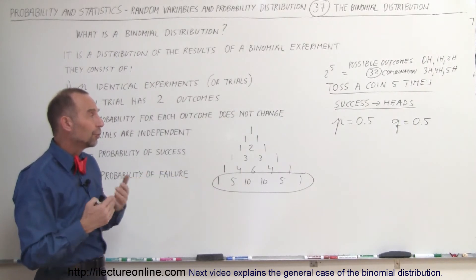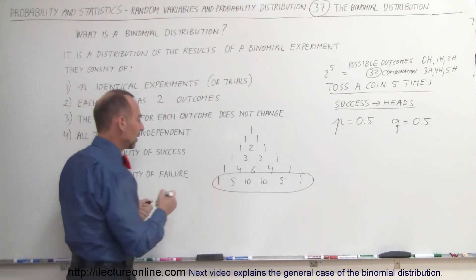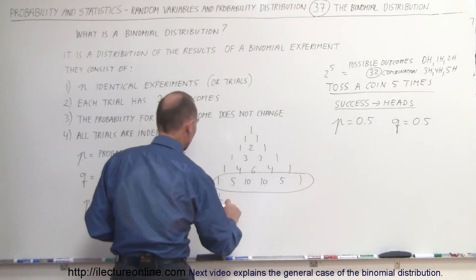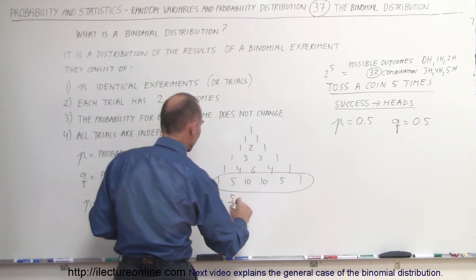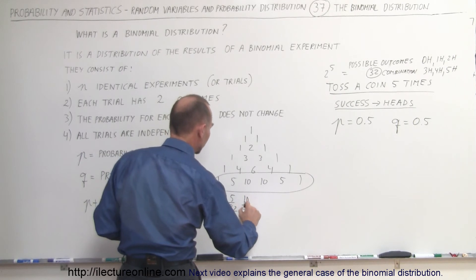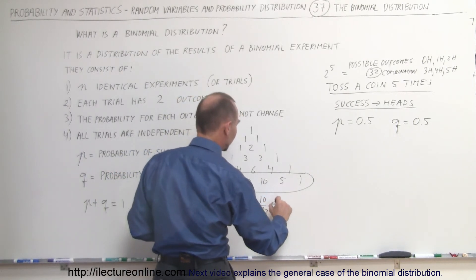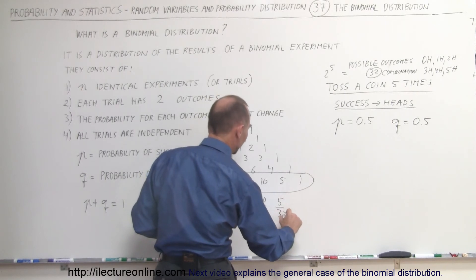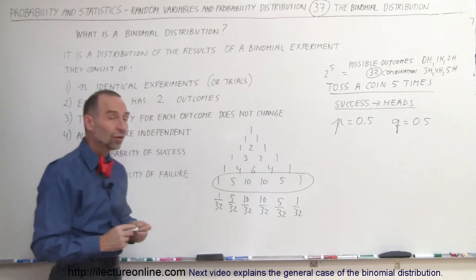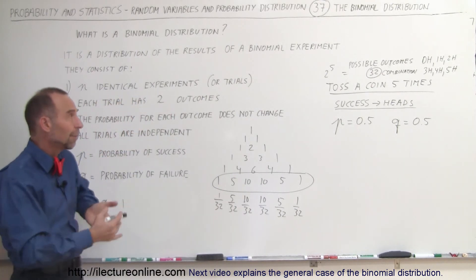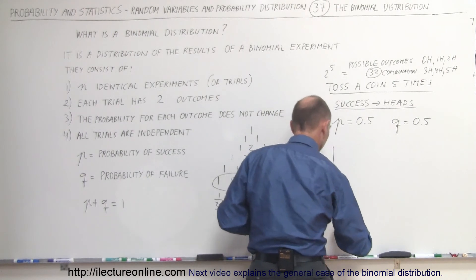Which means out of 32 possible combinations: 1 out of 32 you're going to have 0 heads; 5 out of 32 you're going to have 1 head; 10 out of 32 you're going to have 2 heads; 10 out of 32 you're going to have 3 heads; 5 out of 32 you're going to have 4 heads; and 1 out of 32 you're going to have 5 heads.